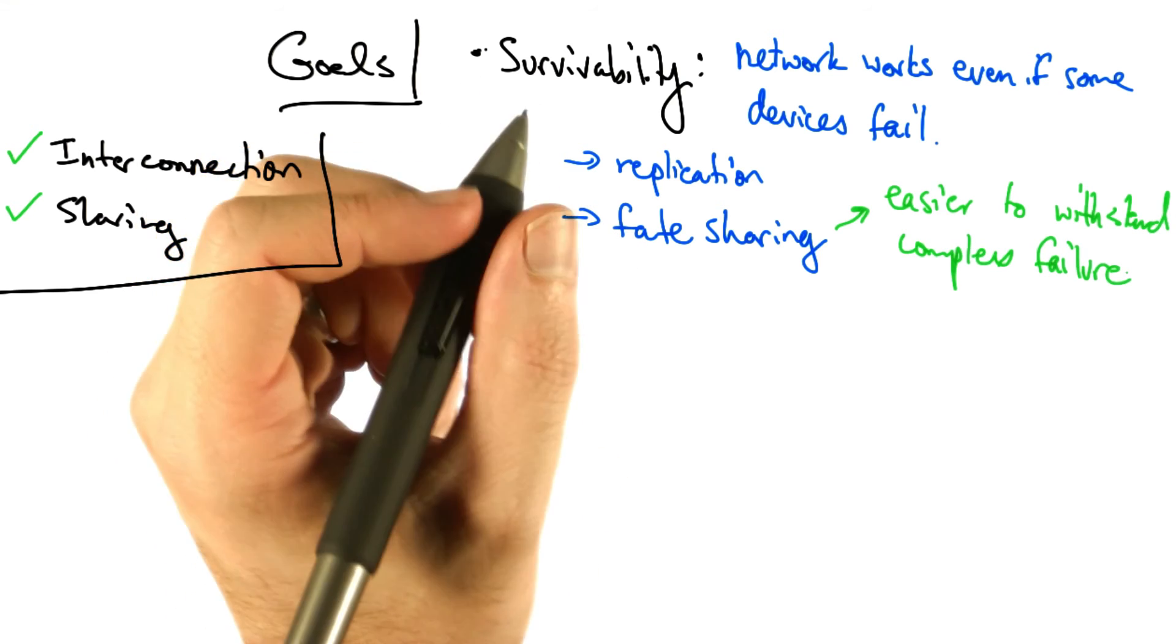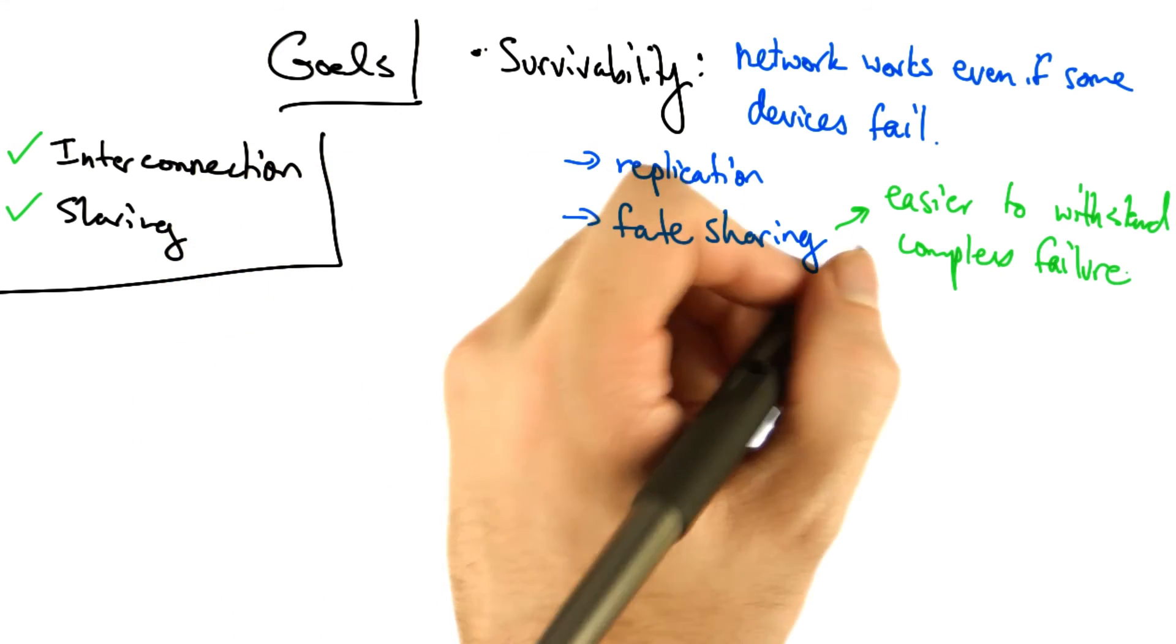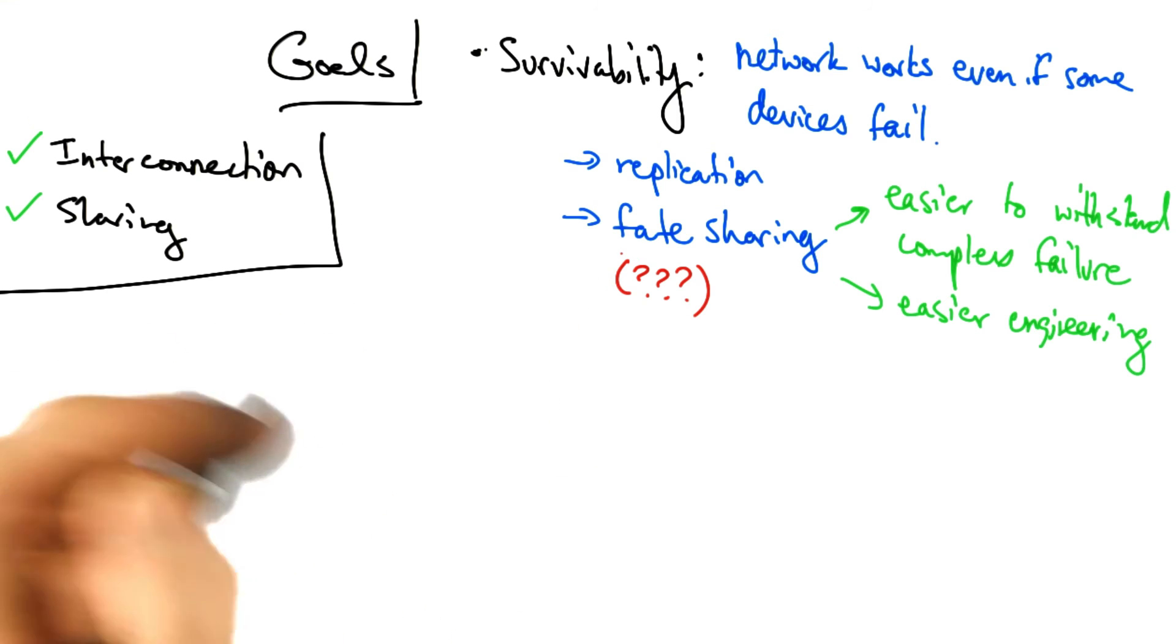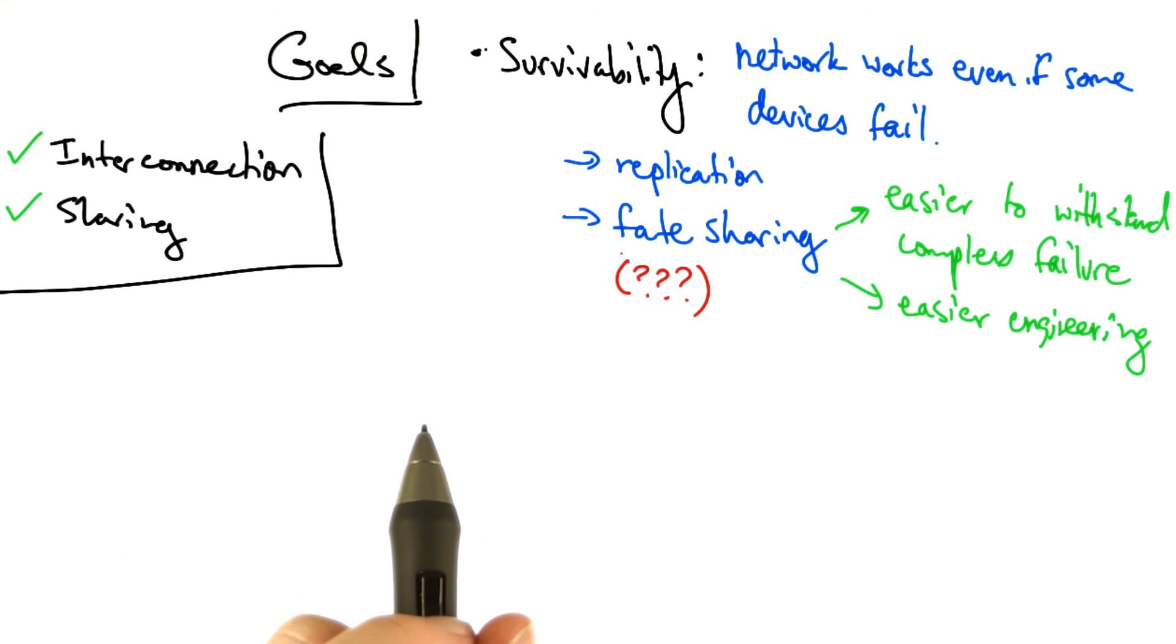So fate sharing makes it easier to withstand complex failure scenarios, and engineering is also easier. Now it's worth asking whether the current internet still satisfies the principle of fate sharing. In a subsequent lesson, we'll talk about network address translation and how it violates the notion of fate sharing.